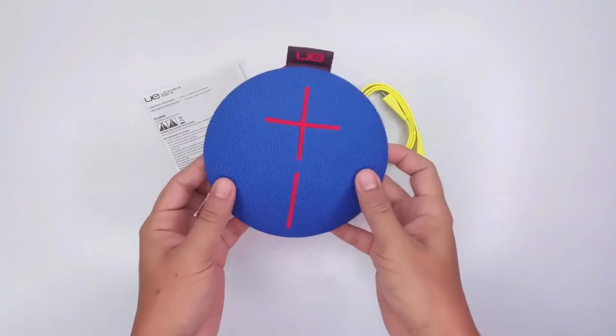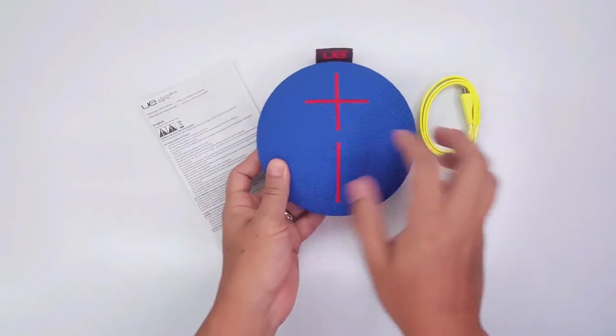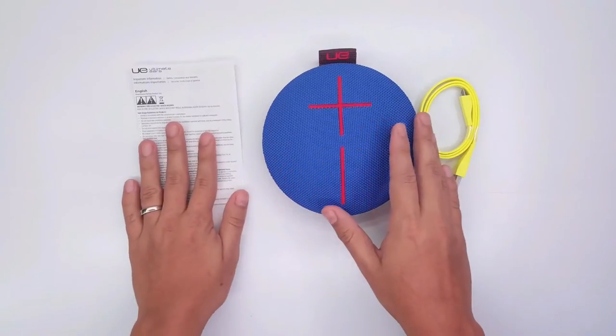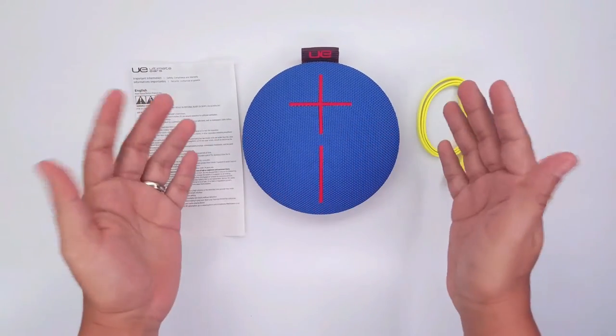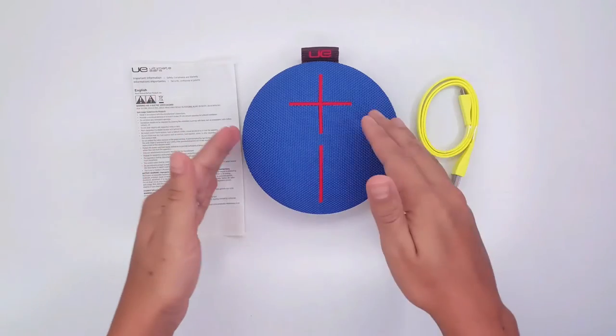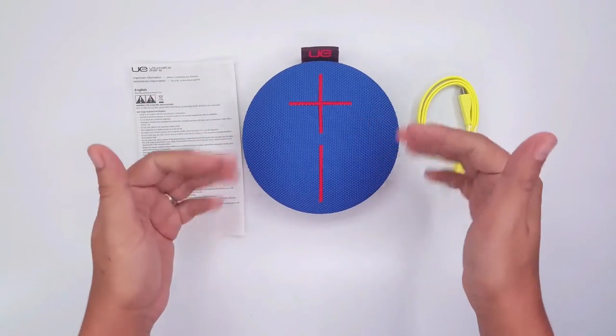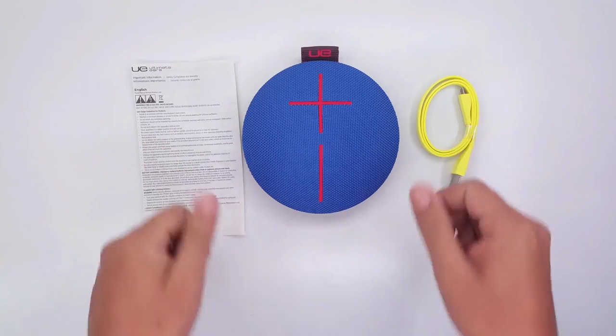All right guys that was the UE Roll and you get your micro USB cable and your specification book. If you want to get one of these I'm going to link one below. This is Corso at TheReviewTech. If you like my video please like and subscribe and see you on the next episode. Bye bye.